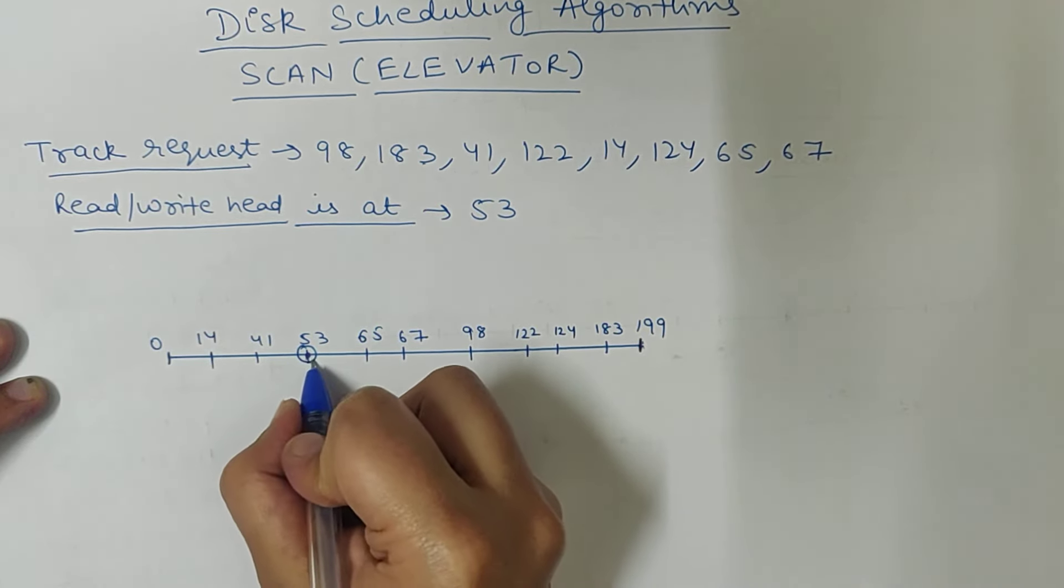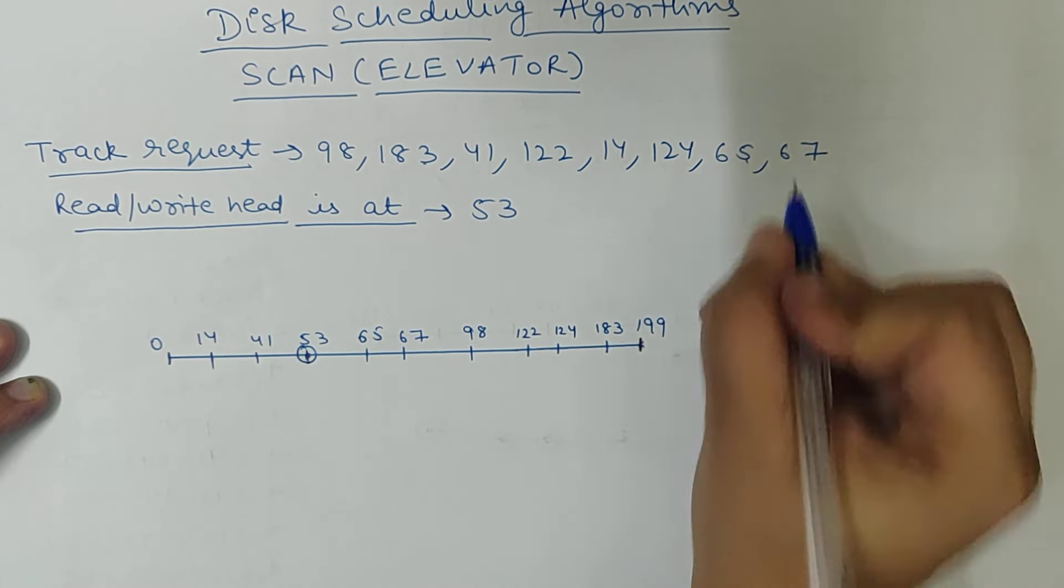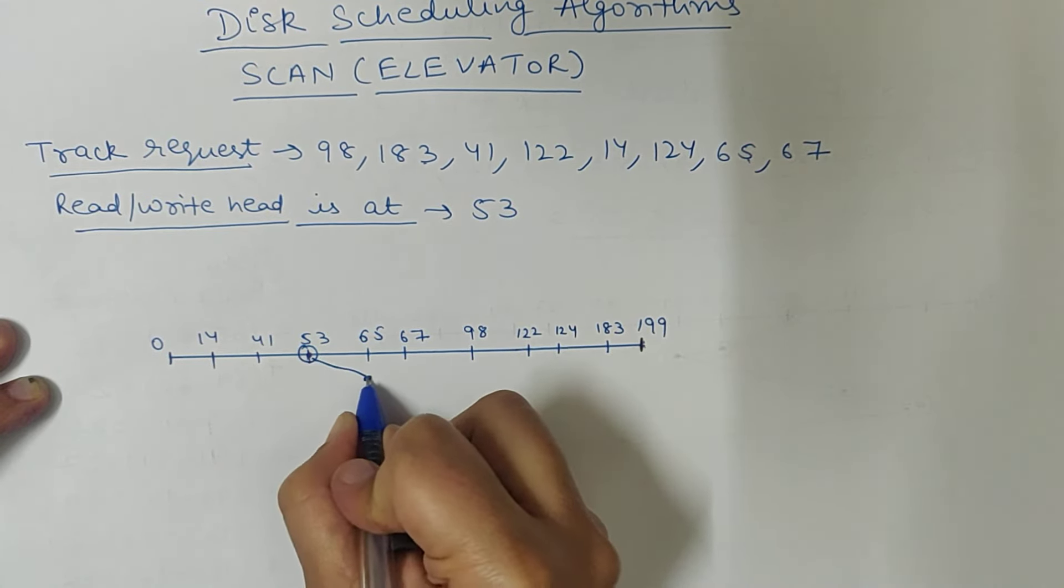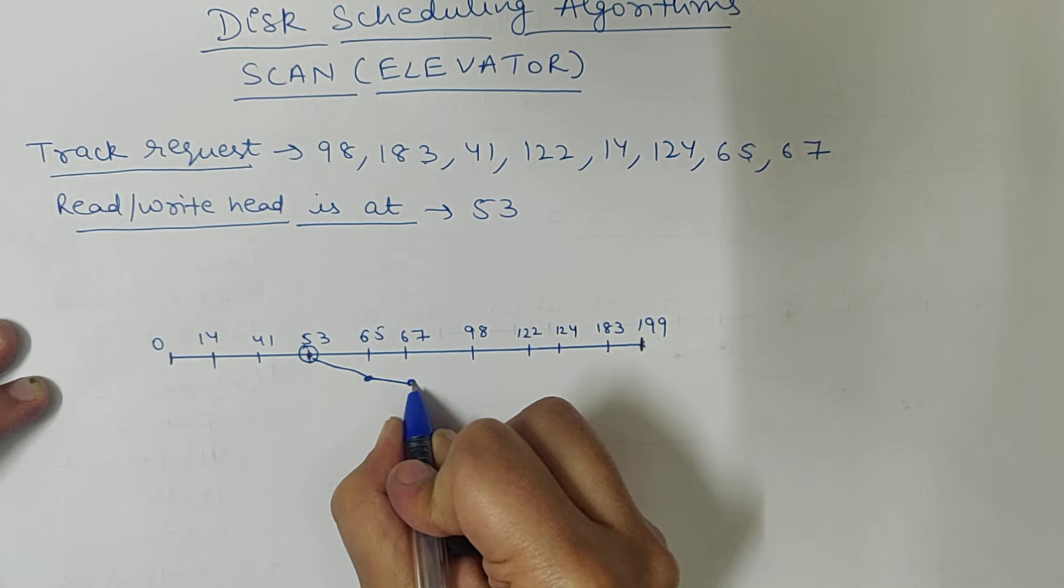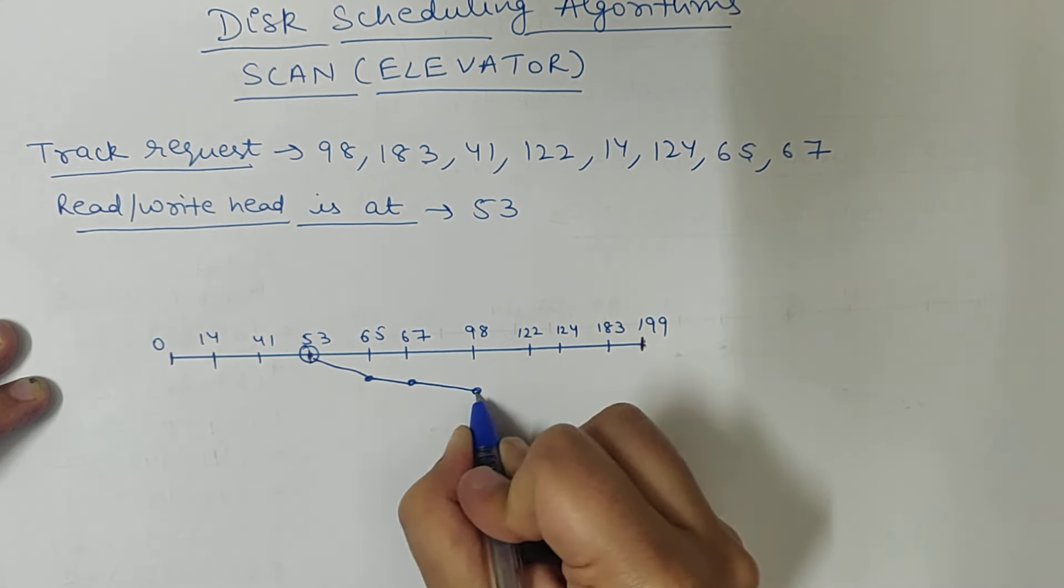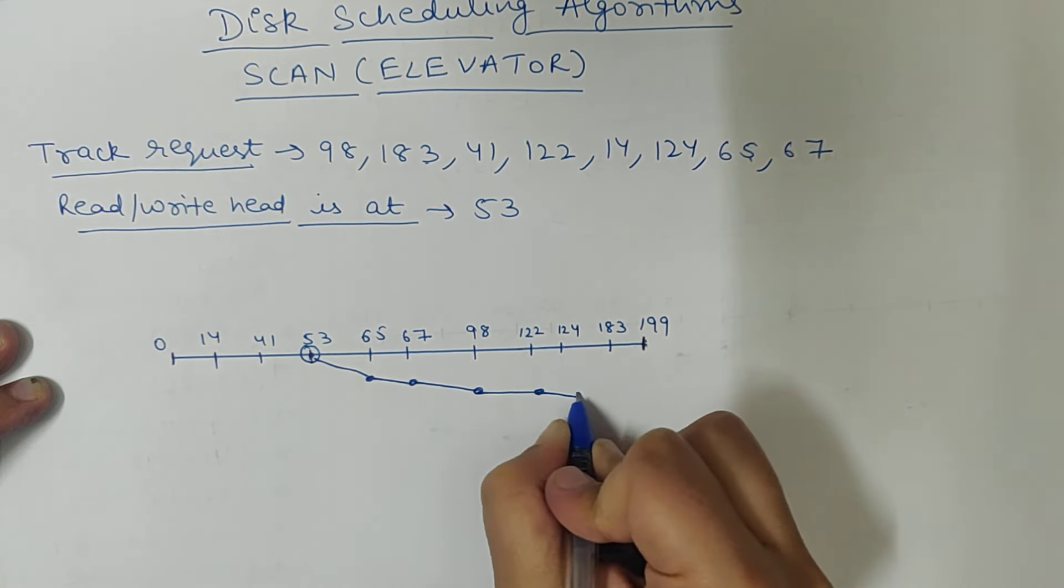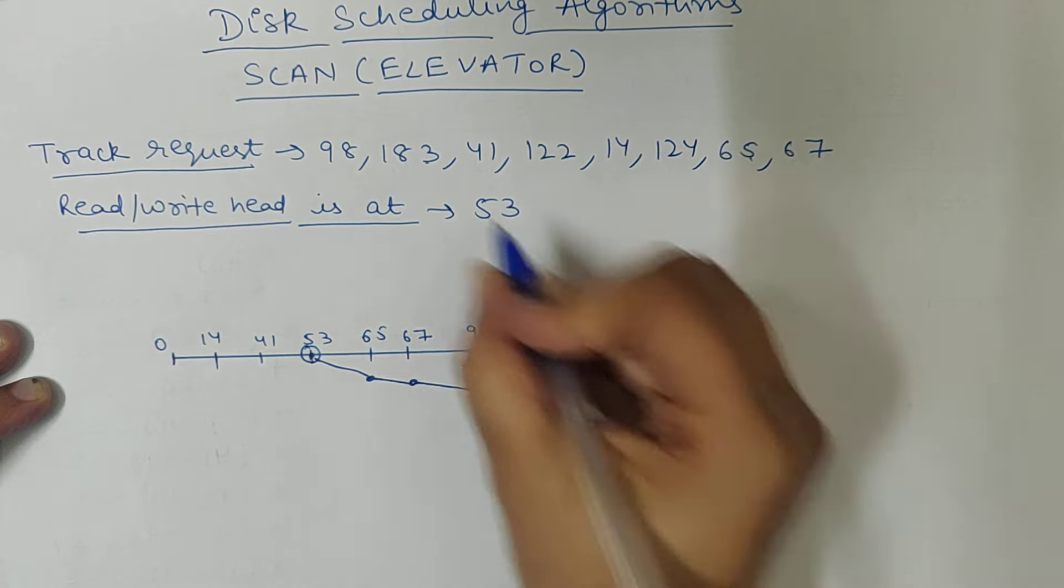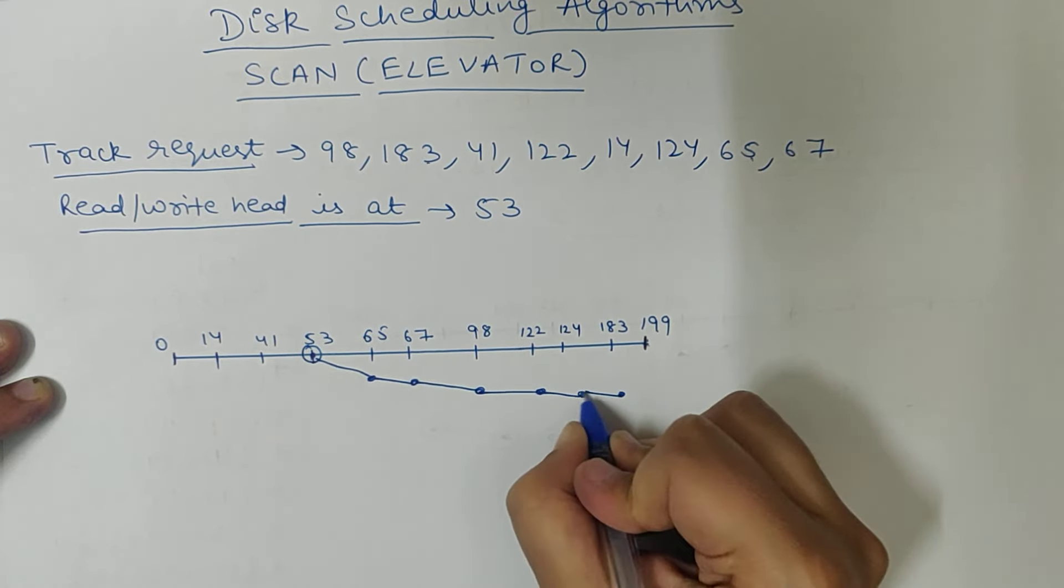First is 53. After 53, our next request is 65, then 67, then 98, then 122, then 124, then 183.